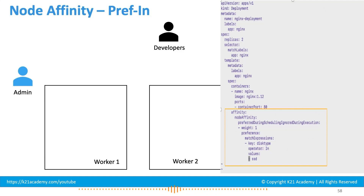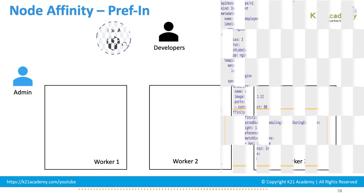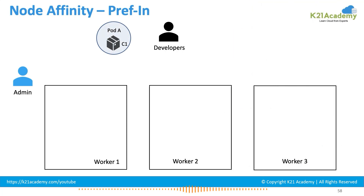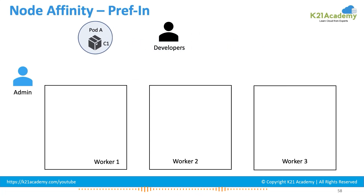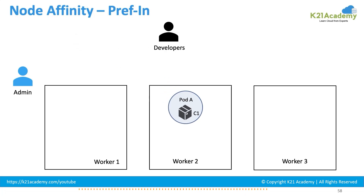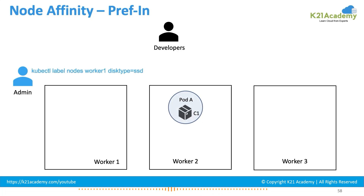When the application file is given to the scheduler, it understands the pod prefers disk type SSD but that is a preferable condition. Even if none of the worker nodes meet the criteria, the pod still gets placed because the condition is not mandatory. If the preferred condition is not matched, the pod gets placed on a non-preferred node. The pod will not go to pending state since the condition has not been mandated.